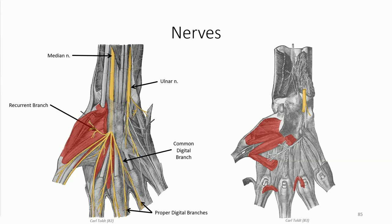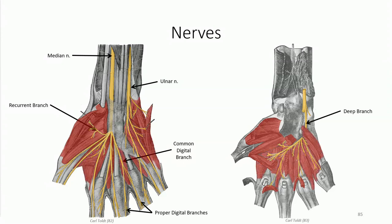From here the nerve gives off a common digital branch similar to that for the median nerve. The common digital branch supplies the medial two lumbricals before branching to give the proper digital branches to the medial aspect of the fourth digit and the lateral aspect of the fifth digit. An additional proper branch supplies the medial aspect of the fifth digit. Additionally, a deep branch supplies motor branches to the hypothenar muscles before diving deep to supply motor branches to the interossei, abductor pollicis, and the medial head of flexor pollicis brevis.